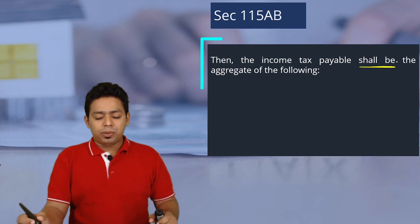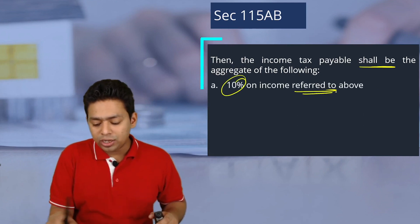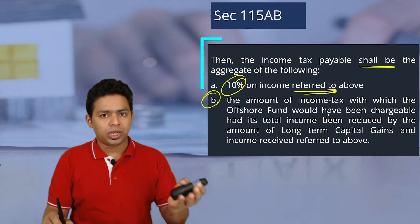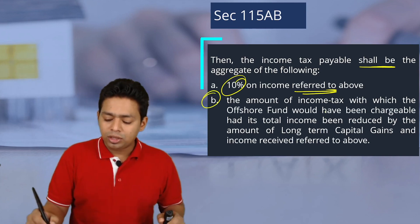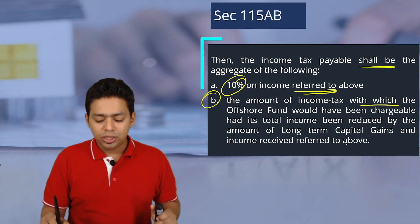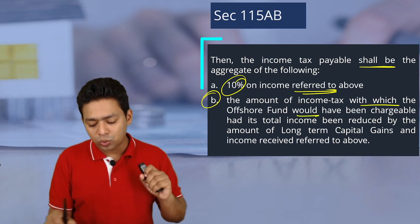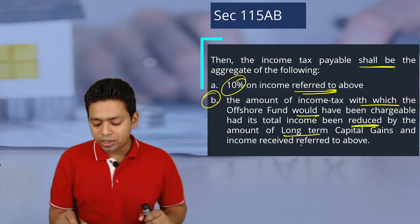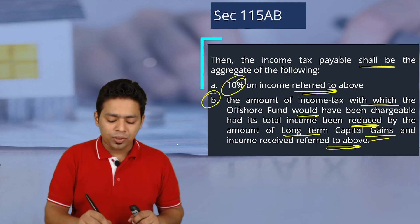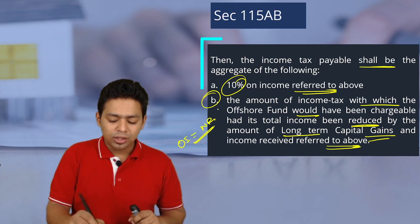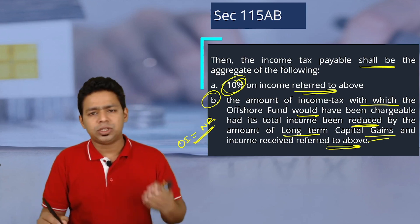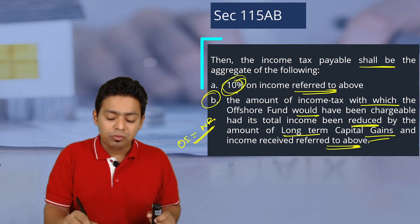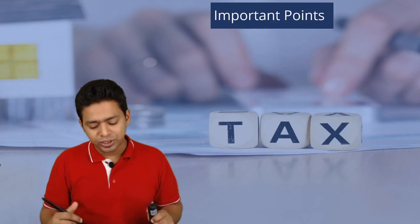The income tax payable shall be the aggregate of: 10 percent on the special income referred above, and for any other income — that other income reduced by the special income — taxed at the normal rate, i.e., the tax which the offshore fund would have been chargeable with had its total income been reduced by the special income. So the special income is taxed at 10 percent, which is very much less than the usual 40 percent rate for foreign companies.